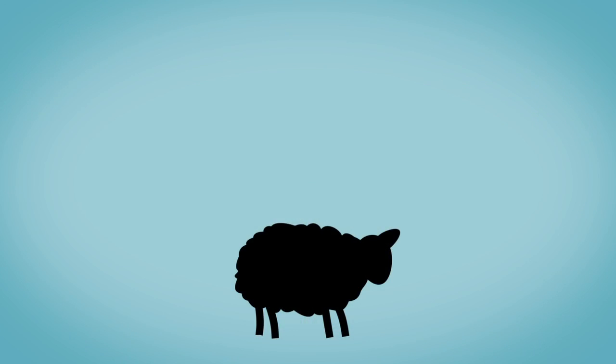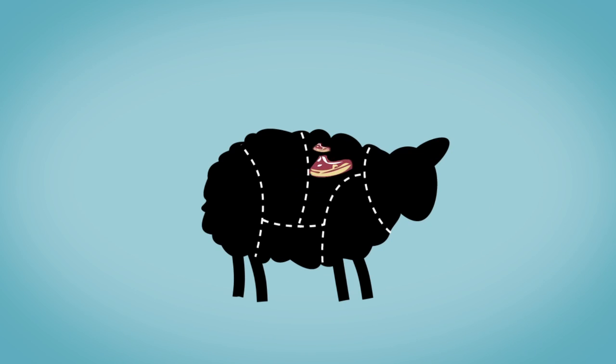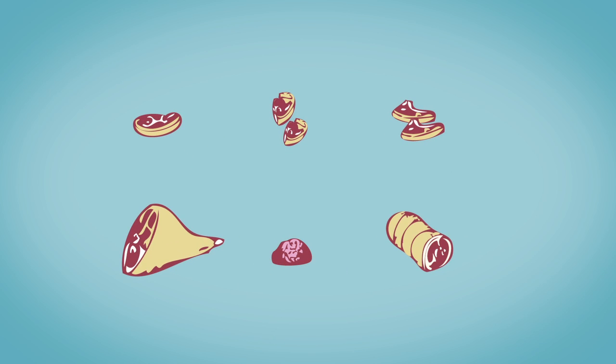When the lambs are ready they are taken to a family butchers who expertly cut the meat to your specification. Your order will then be vacuum packed ready for cooking or freezing.